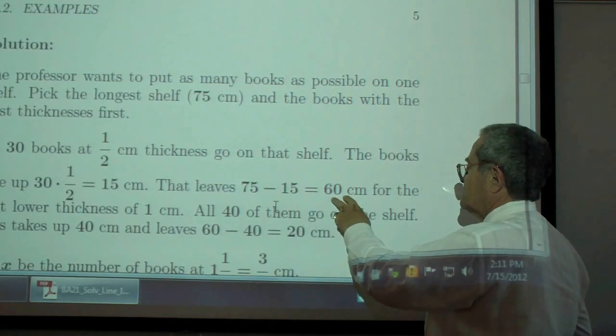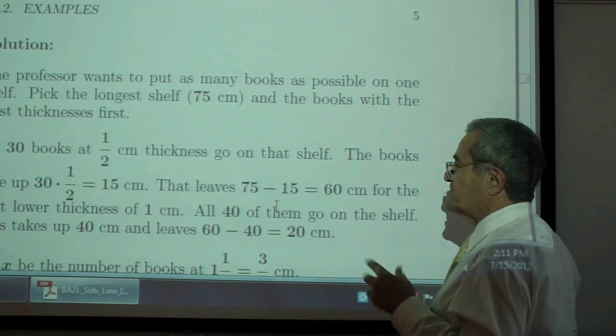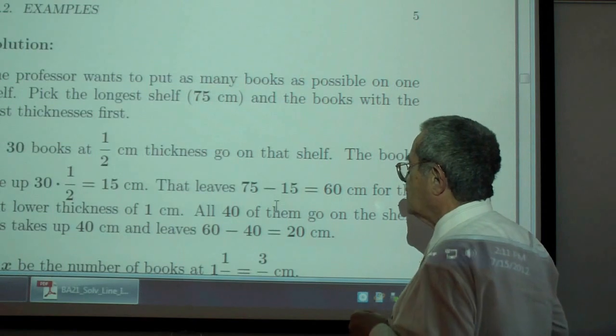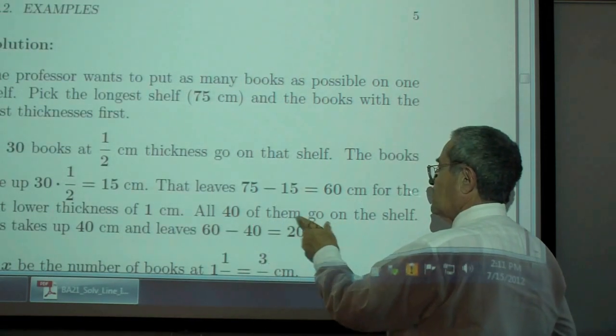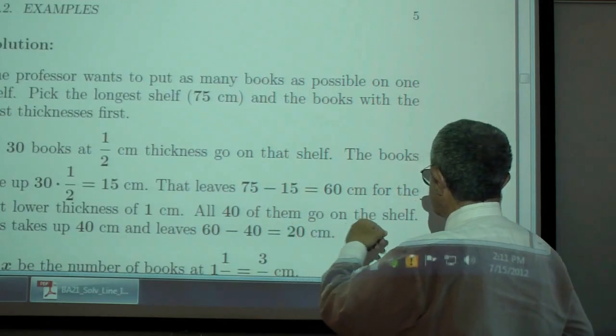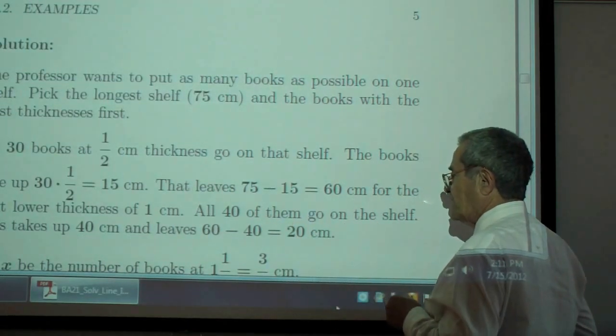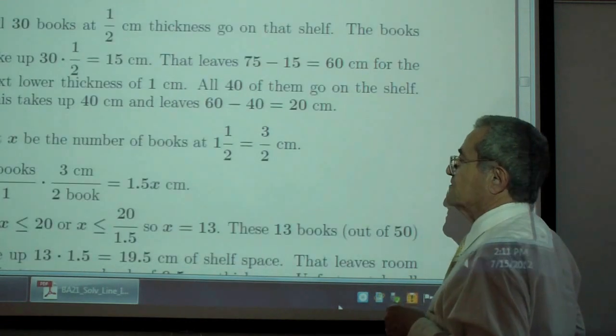That leaves 75 minus 15 or 60 centimeters for the next lower thickness of one centimeter. All 40 books of one centimeter can be put on the shelf. That leaves you with 20 centimeters to be filled.